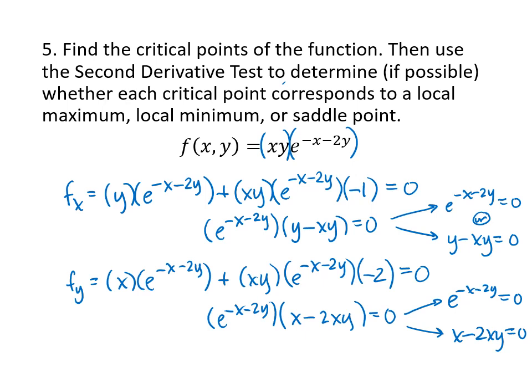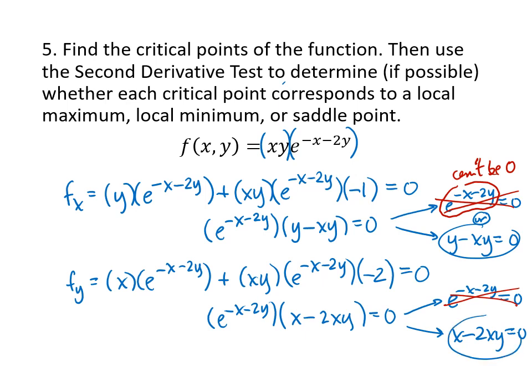An exponential expression can never equal zero — we can never get zero when we raise e (which is 2.7-something) to any power. So those exponential factors yield no roots. The system we're really working with boils down to: y minus xy equals 0, and x minus 2xy equals 0.